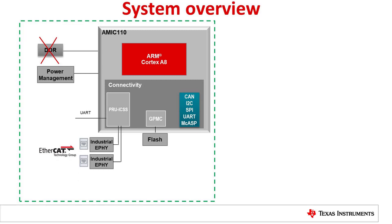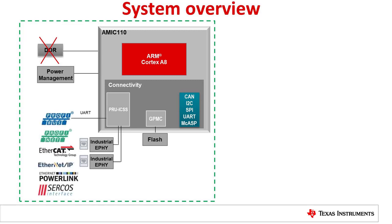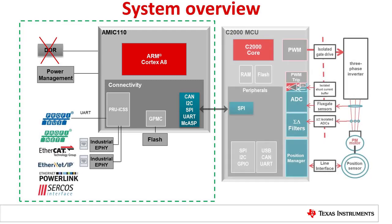In addition, the AMIC 110 software and firmware-based architecture and the PRU-ICSS industrial communication suite scales to support multiple industrial Ethernet and fieldbus communication standards such as PROFINET, PROFIBUS, and Ethernet IP. When combined with a C2000 MCU, the AMIC 110 provides a low-cost, high-performance connected industrial drive solution.